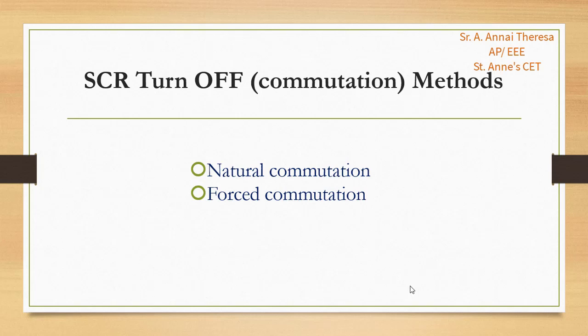This continuous conduction of the thyristor causes problems in some applications. So the process used for turning off a thyristor is called commutation. By the commutation process, the thyristor or SCR operating mode is changed from forward conducting mode to forward blocking mode. So thyristor commutation methods are used to turn off the thyristor.